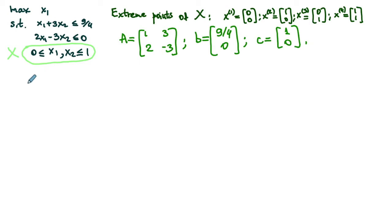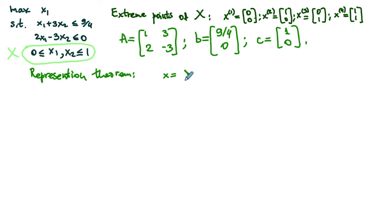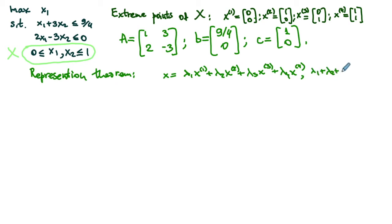To develop the Dantzig-Wolfe reformulation, we use the representation theorem to describe any point from the set X as a convex combination of the extreme points. So we have x = λ₁x¹ + λ₂x² + λ₃x³ + λ₄x⁴, where the summation of the λⱼ's equals one and all λⱼ's are non-negative.